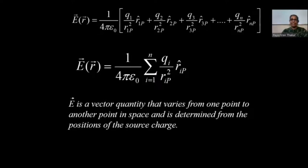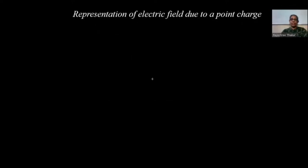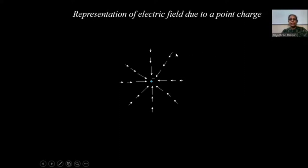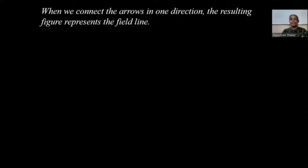Let us see how we represent the electric field due to a point charge. Since electric field is a vector, we represent the field with the help of vectors, where the length of the vector is proportional to the strength of the field. As you go away, the length decreases because the electric field strength also decreases with distance. If it is a negative charge, the electric field vector will be pointing inwards. When we connect the arrows in one direction, the resulting figure represents the field line.